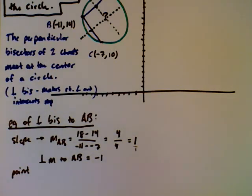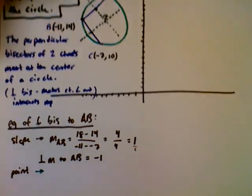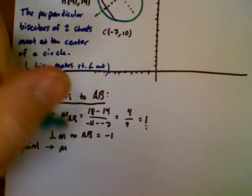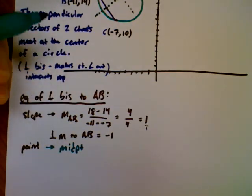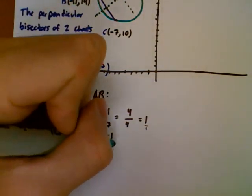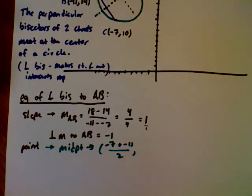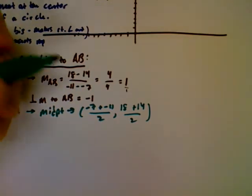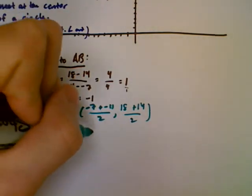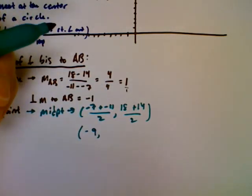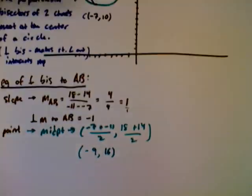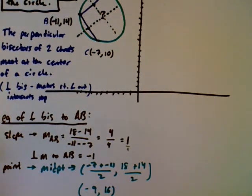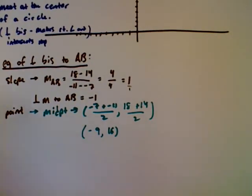The point we need is the midpoint of AB. To find the midpoint, we average the x-values and average the y-values. That's negative 7 plus negative 11 over 2 for x, and 18 plus 14 over 2 for y. Negative 18 divided by 2 is negative 9, and 32 divided by 2 is 16. So the midpoint is negative 9, 16, which makes sense looking at the picture.